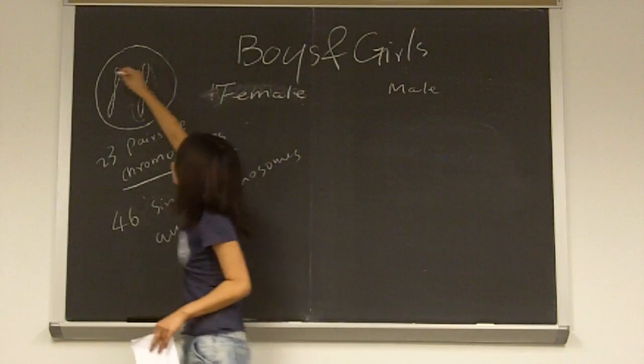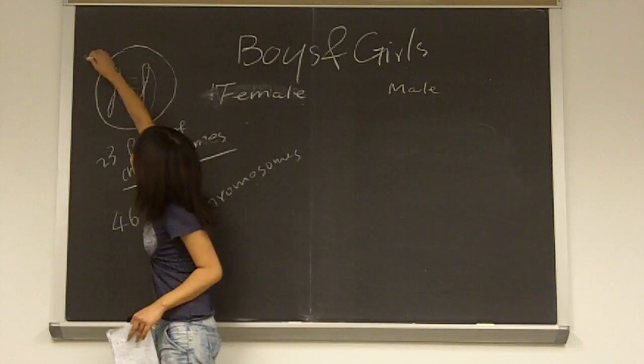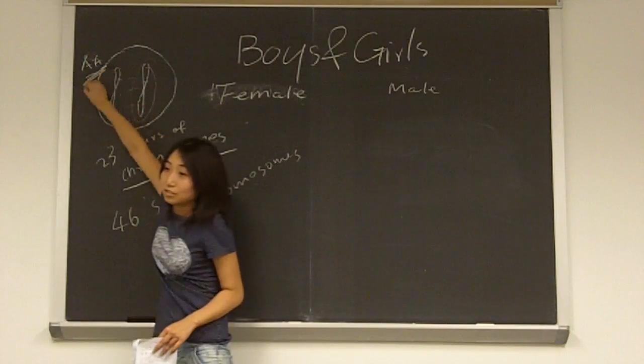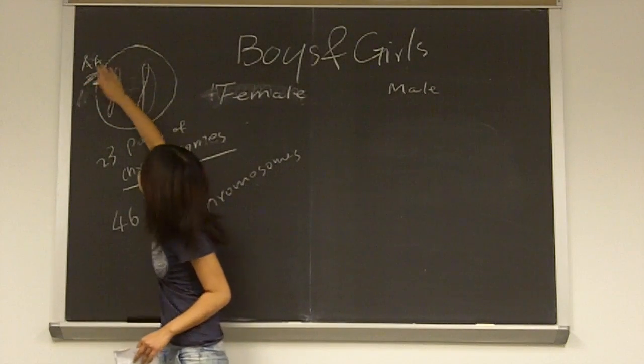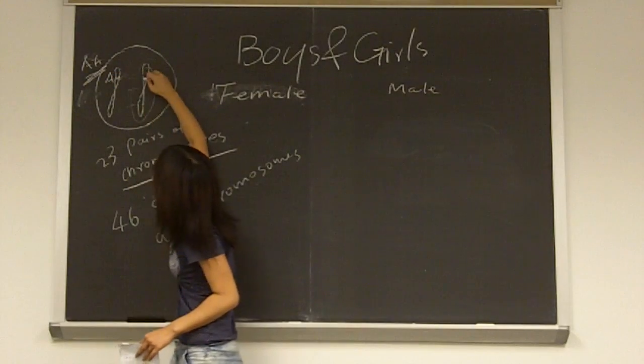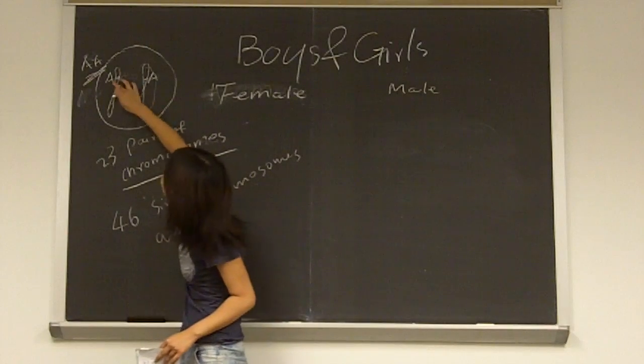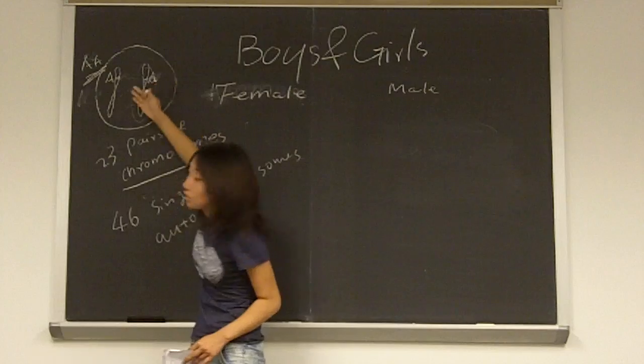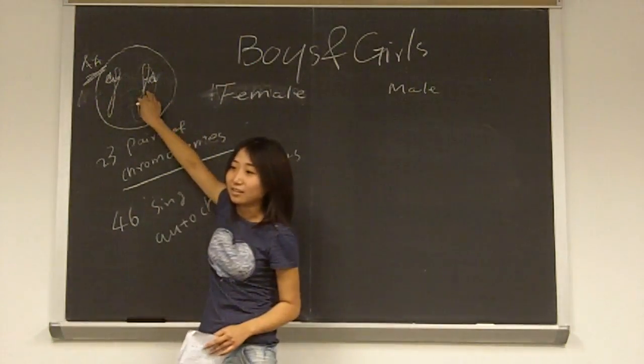If you have this type of gene A and A, you will have blue eyes. If you have this one is A and this one is a, you still have blue eyes. And if you have this one is a and this one is a, maybe you will have black eyes.